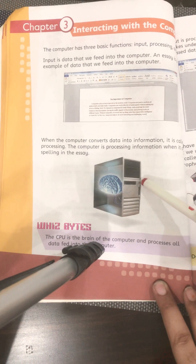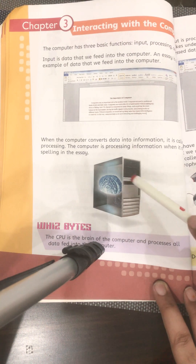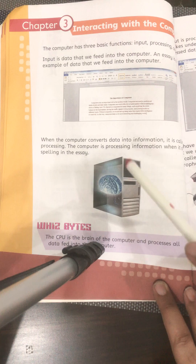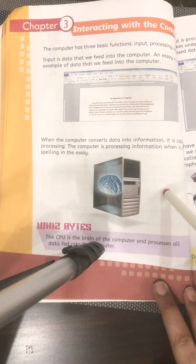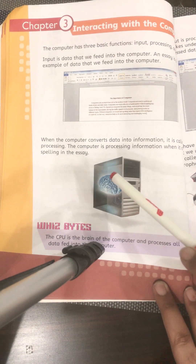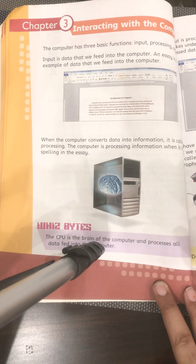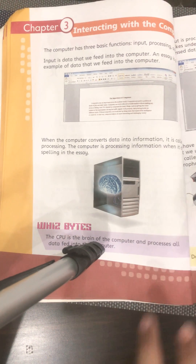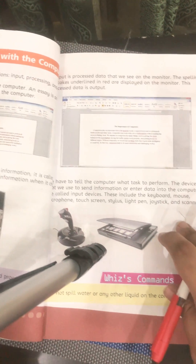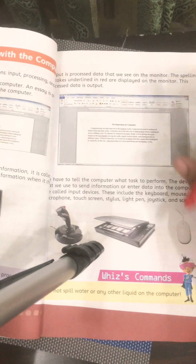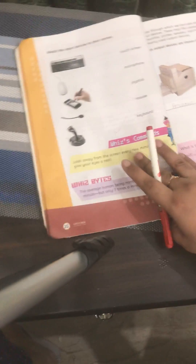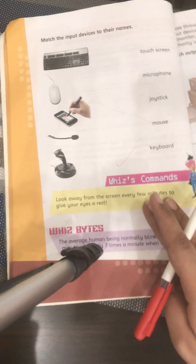For example, if you want to print a document, you enter the data with the help of the keyboard, then the CPU connects the keyboard to itself, processes the data, and then connects to the printer so it can print it out. We also discussed some input devices including the joystick, scanner, and mouse. Now let's start today's lesson.